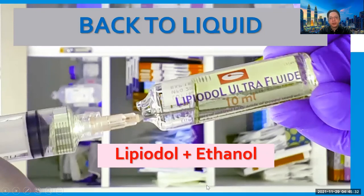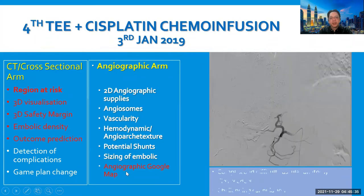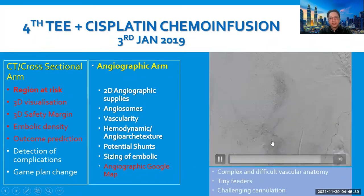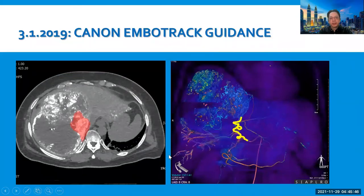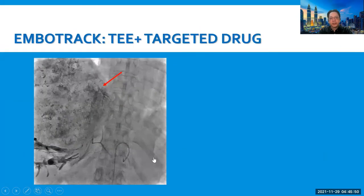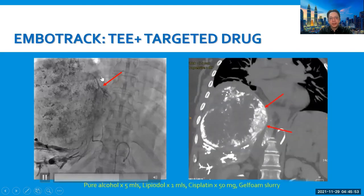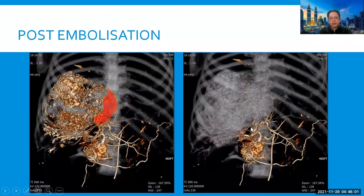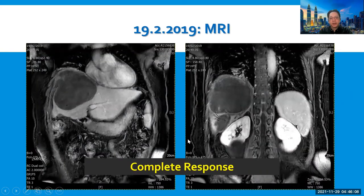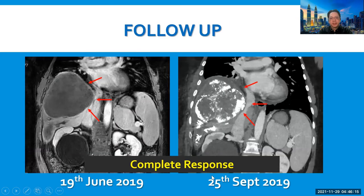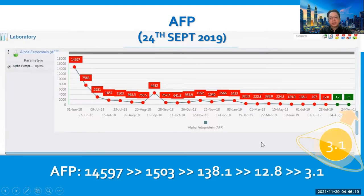The next course of action was to continue lenvatinib and initiate super-selective TACE or transarterial internal embolization. We decided back to liquid embolization, using angiographic Google Maps assistance. By outlining the area of interest using the software and correct angulation, we targeted the area of interest with a 1.8 French microcatheter, successfully cannulated the feeding artery, and embolization was performed. Complete ablation was achieved on table. Follow-up alpha-fetoprotein showed further decrease to 325, and three-month MRI showed complete response. At nine months, alpha-fetoprotein improved further to 3.1, and today the patient is still alive.